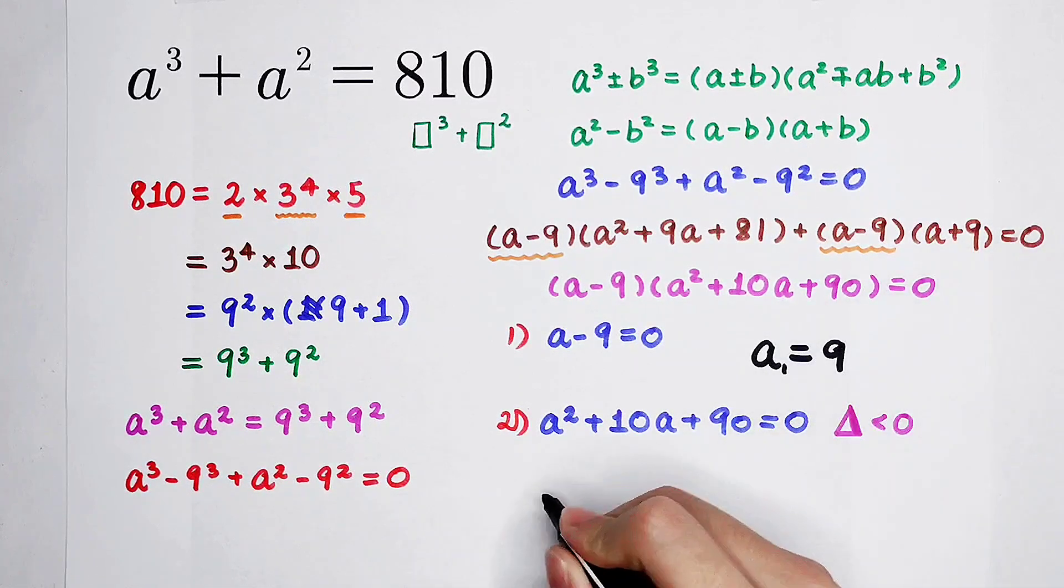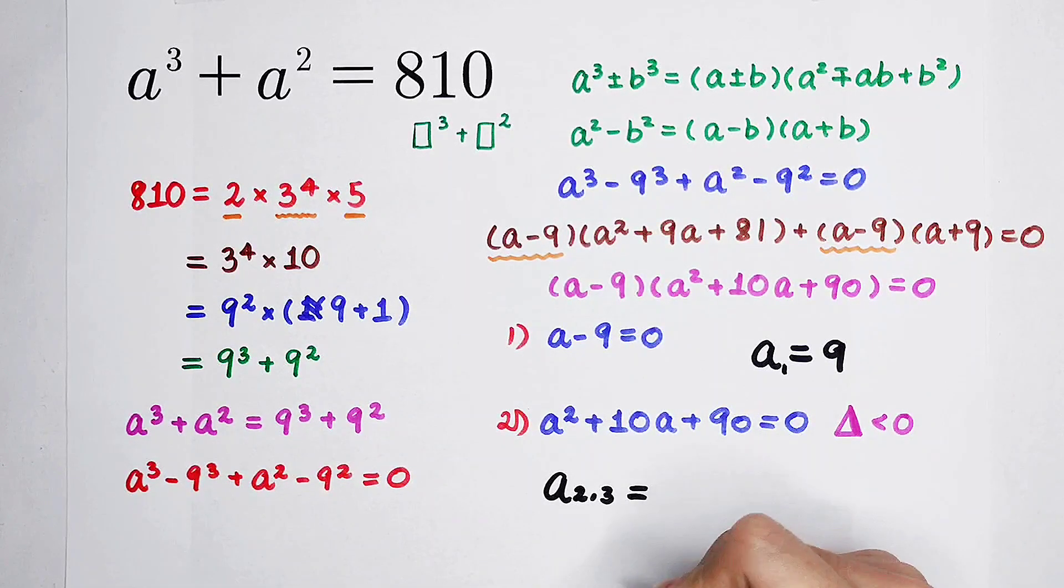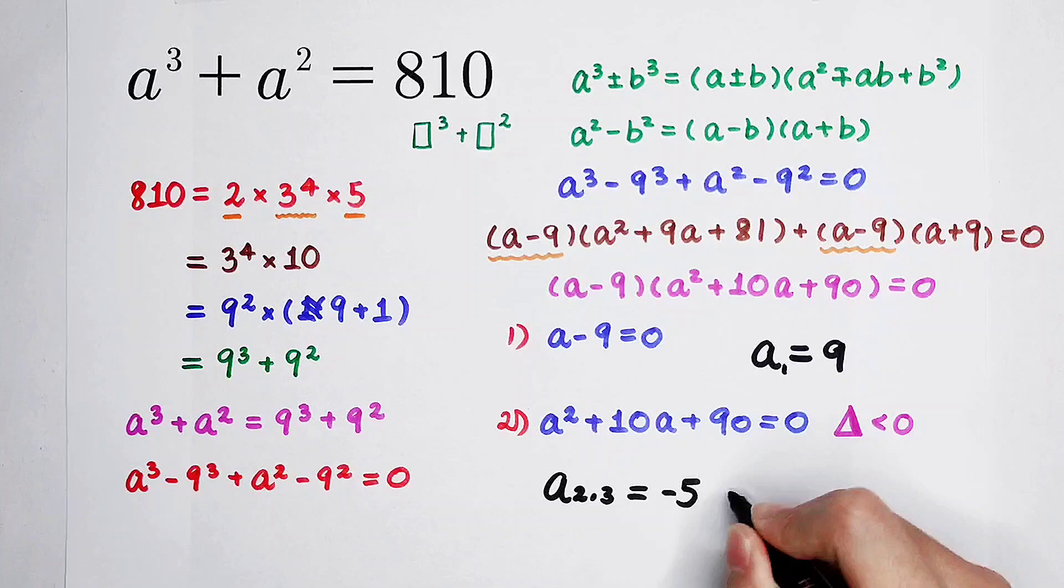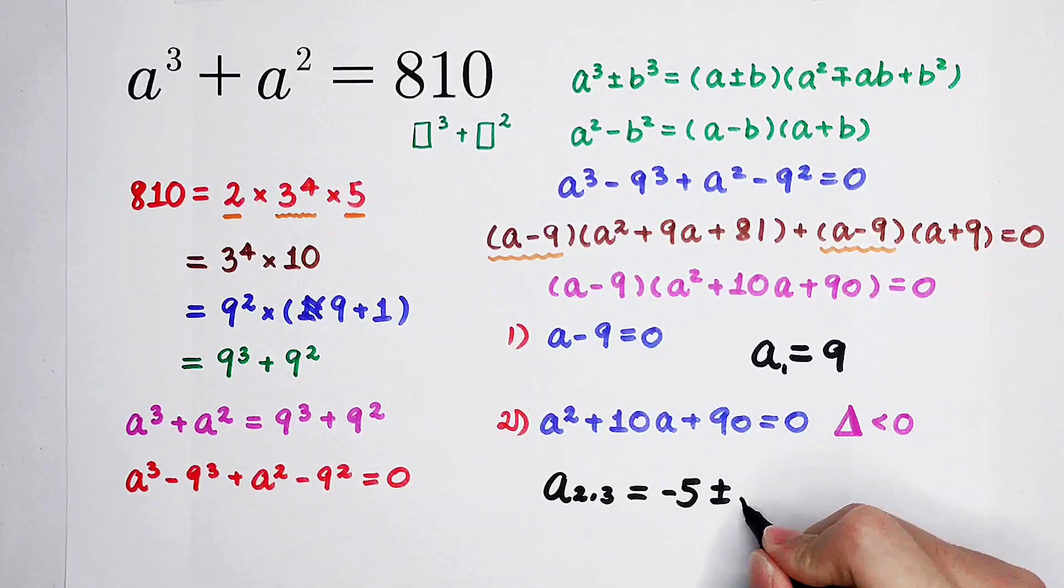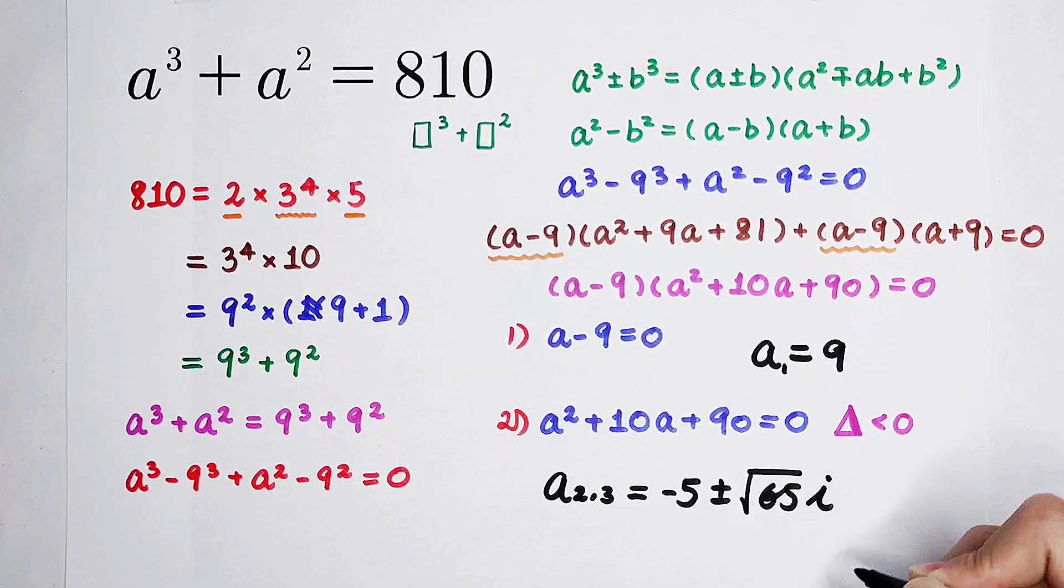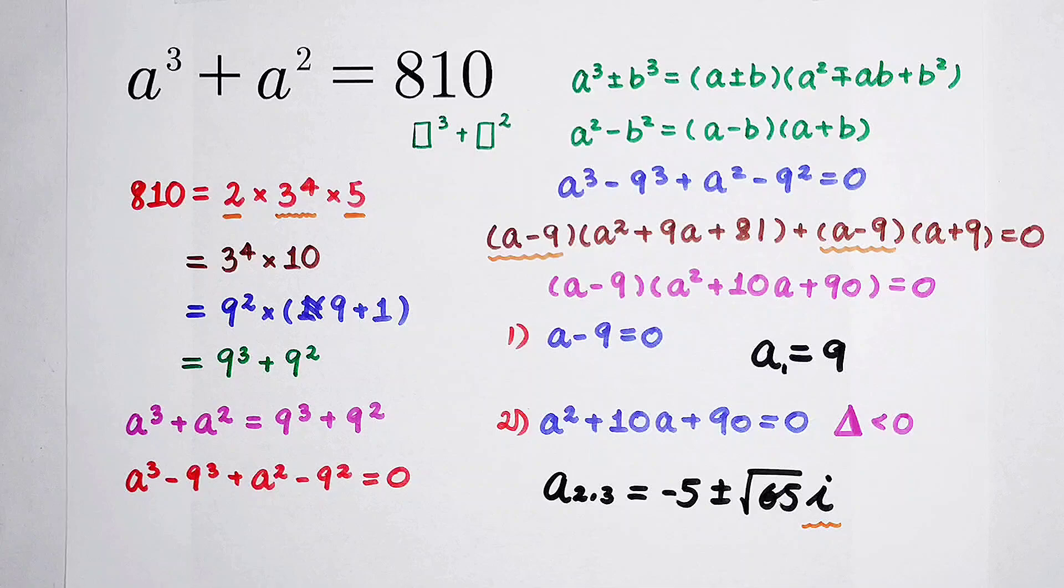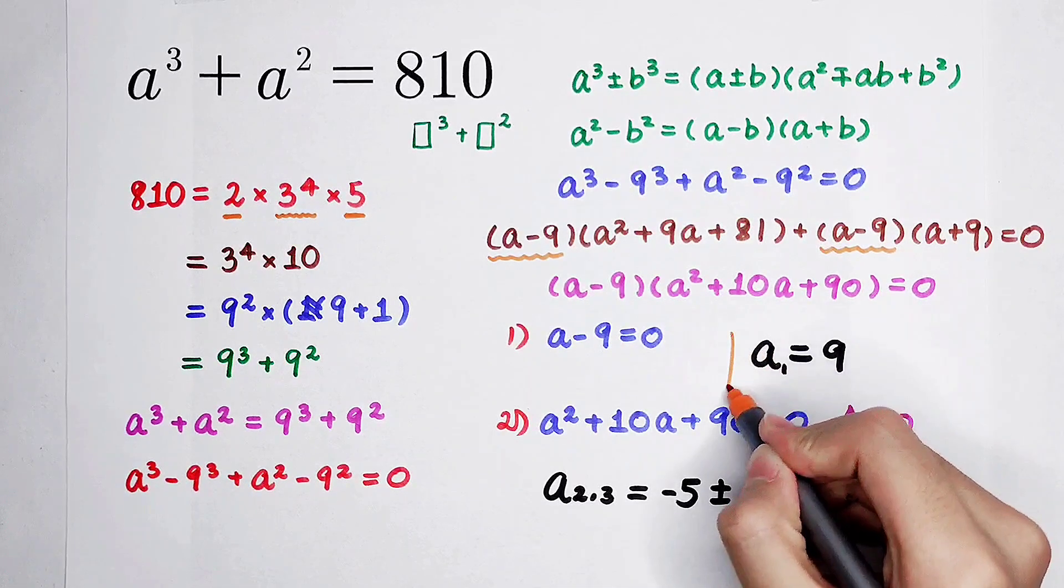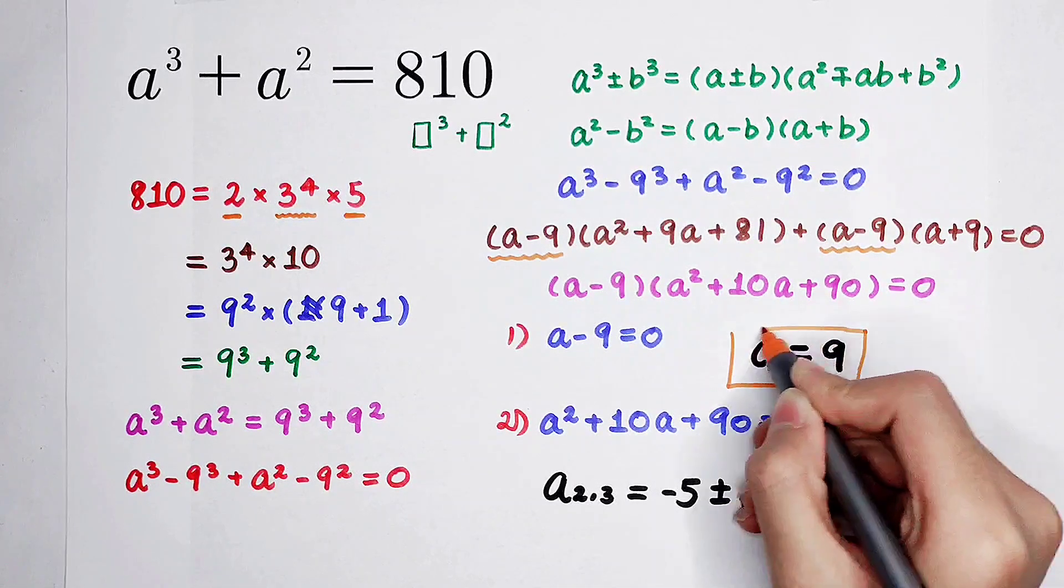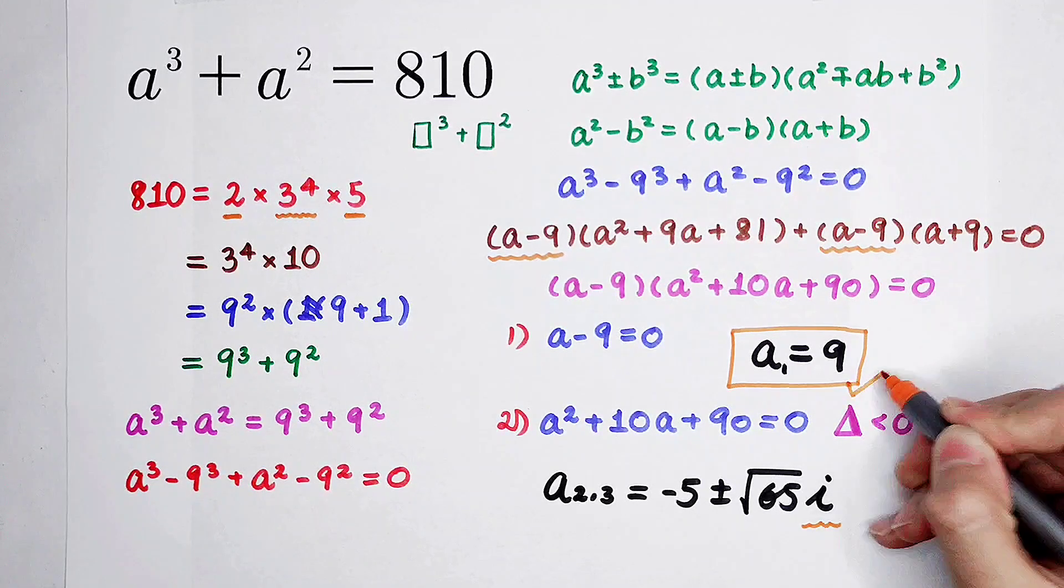This is a1. And a2 or a3 is equal to minus 5 plus or minus square root of 65 times i. i is equal to square root of negative 1. This is our only real root. Do you get it?